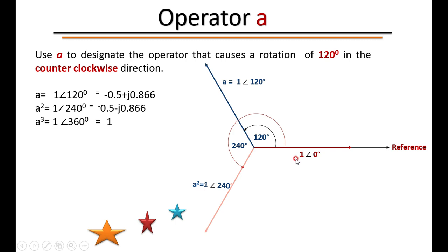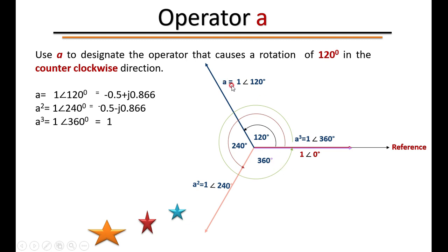If you apply a³ on the vector 1∠0°, it rotates through a total angle of 360 degrees in the anticlockwise direction, giving 1∠360°, which returns to the reference. So the significance of 'a' is: a = 1∠120°, with rectangular form −0.5 + j0.866. This operator is frequently used in the synthesis of symmetrical components.